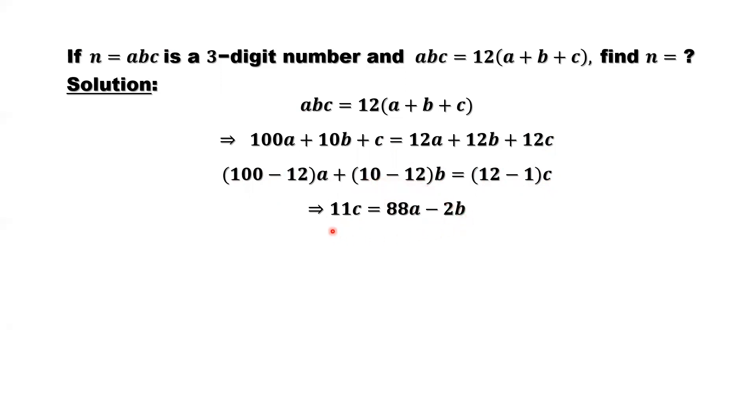Both sides divided by 11. Simplify, 88 divided by 11 is 8. So c equals 8 times a minus 2b divided by 11.